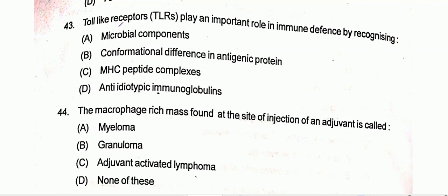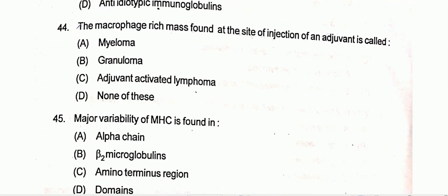Question number 43: Toll-like receptors (TLRs) play an important role in immune defense by recognizing microbial components. Question number 44: The macrophage-rich mass found at the site of injection of an adjuvant is called granuloma. Option B is the correct one.